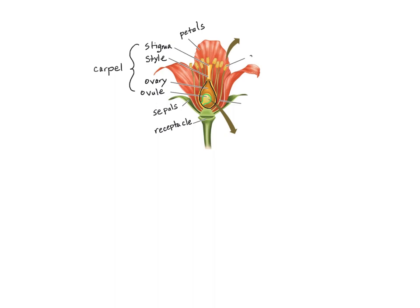On the male side, we have the anther, the filament, and together these form the stamens. Now, this is an example of a perfect flower because it has both male and female parts on the same flower. Keep in mind that we're dealing with the multicellular sporophyte generation here, so all the parts we've talked about so far are diploid.